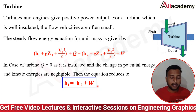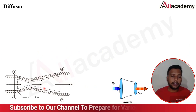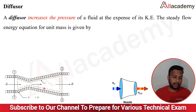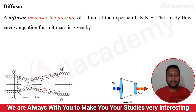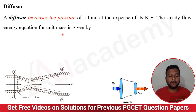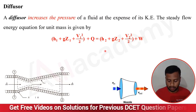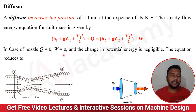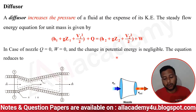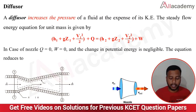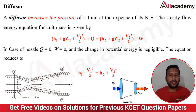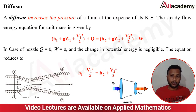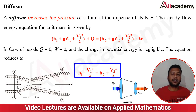The next application is the diffuser. A diffuser increases the pressure of a fluid at the expense of its kinetic energy. In the case of diffusers, Q equals zero and W equals zero — heat and work interactions are both zero. The change in potential energy is also negligible. Thus the steady flow energy equation reduces to: H1 + V1²/2 = H2 + V2²/2.